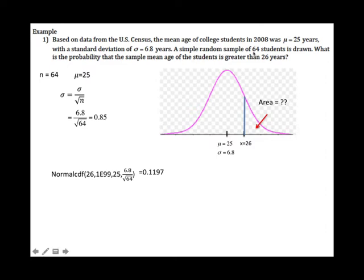To summarize: this is a non-standard normal distribution and the sample size is 64, so we can apply the Central Limit Theorem. Find the mean — it doesn't change. Plug into the formula to find the standard deviation. They're looking for the probability, which means the area. Greater than 26 years means looking for the area to the right. Use your calculator.